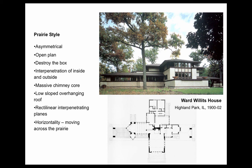There's a massive chimney core pinning it down, a low sloped overhanging roof, and rectilinear interpenetrating planes — this kind of effect of planes interpenetrating each other. Horizontality — this is like the prow of a ship, as though we're moving across the prairie. American openness, movement westward, change.